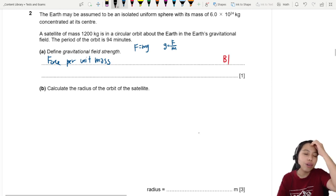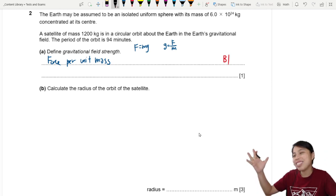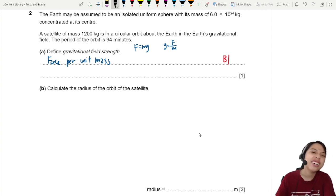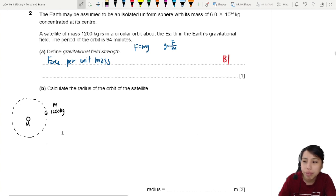Calculate the radius of orbit of the satellite. If they never give us a diagram, we gotta draw our own diagram. So we have Earth, draw a pretty big mass and a nice circular satellite going around. We have 1200 kg, this is the small M. We got a big M here, small M there.